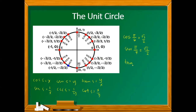How about tangent 2π over 3? This equals y over x. By inspection, the y and x-coordinates at 2π over 3 are square root of 3 over 2 and negative 1/2, respectively. Simplifying the complex fraction, we have tangent 2π over 3 equals negative square root of 3.